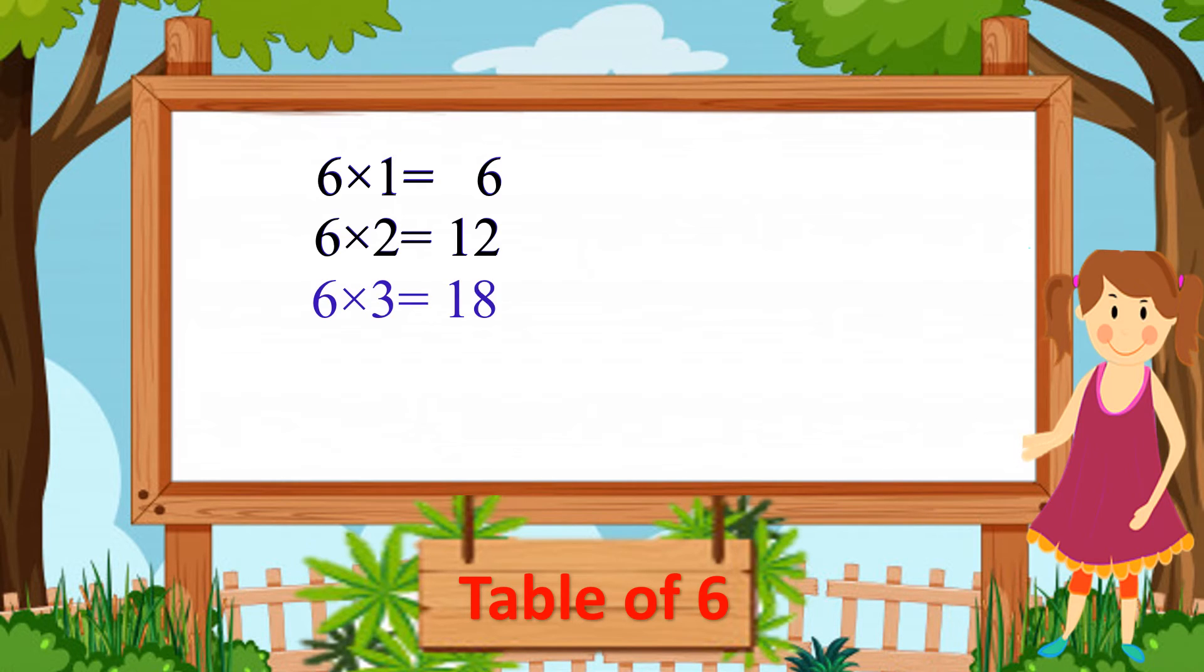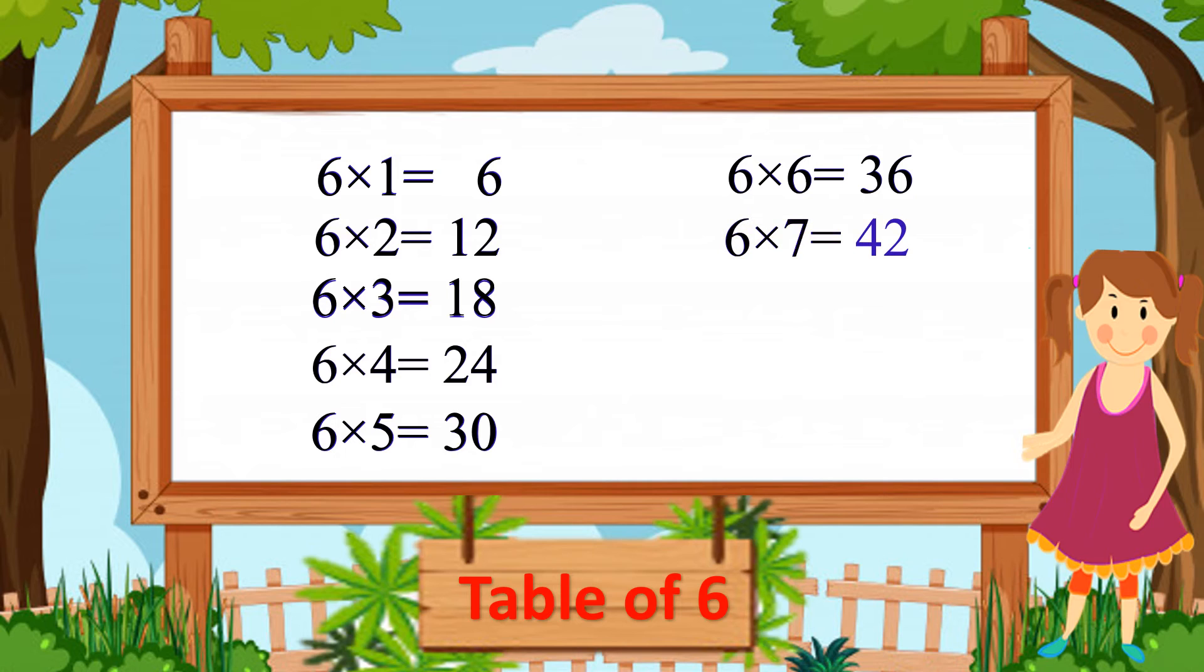Six fours are twenty-four, six fours are twenty-four. Six fives are thirty, six sixes are thirty-six. Six sevens are forty-two, six sevens are forty-two. Six eights are forty-eight, six eights are forty-eight. Six nines are fifty-four, six nines are fifty-four. Six tens are sixty, six tens are sixty.